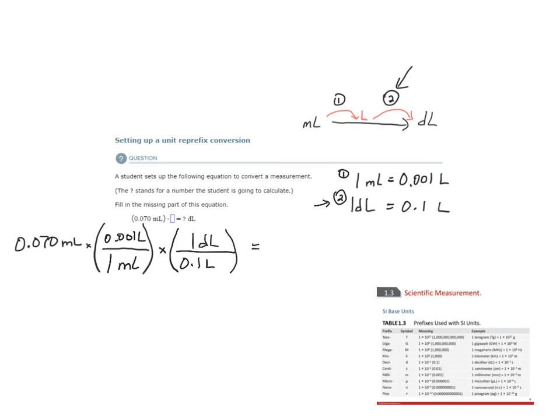And so when I check my units here, liters cancels, milliliters is canceled and deciliters is left. And so this will allow me to convert from milliliters to deciliters. We don't actually have to do this calculation, but we have set it up so that the units cancel. And I know that if I did do this calculation according to this plan, I would have the correct answer.